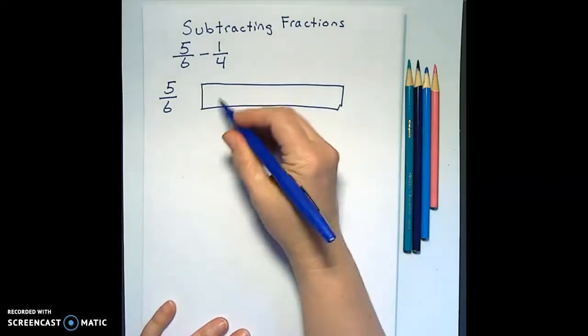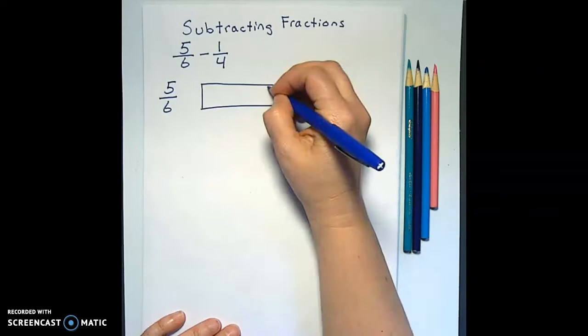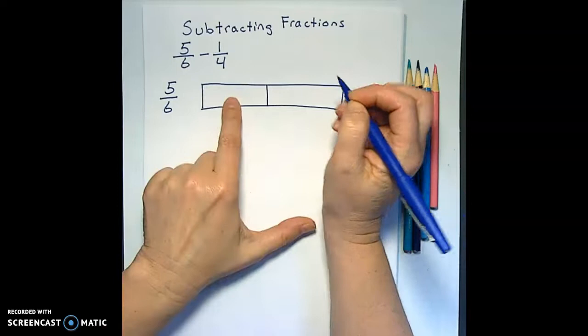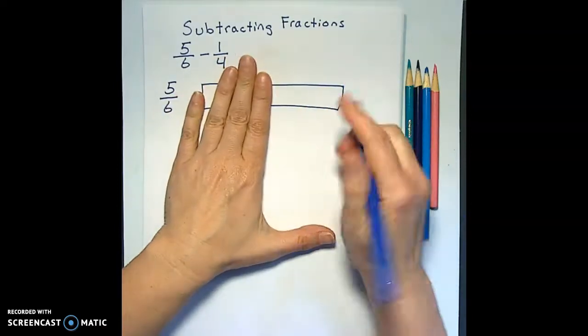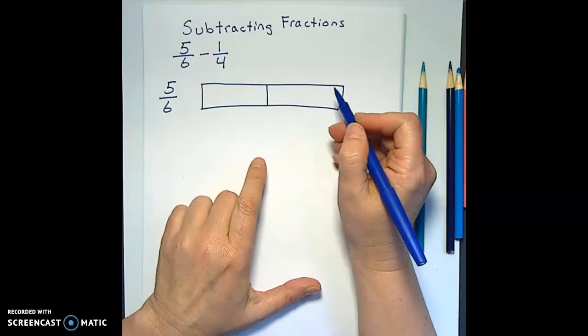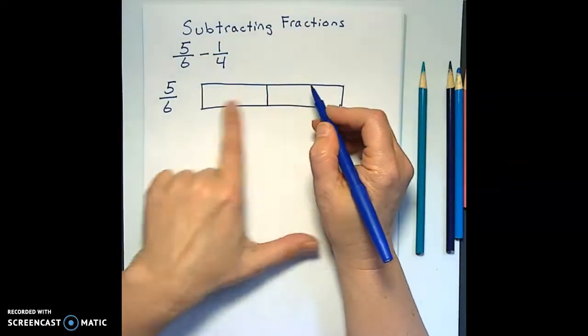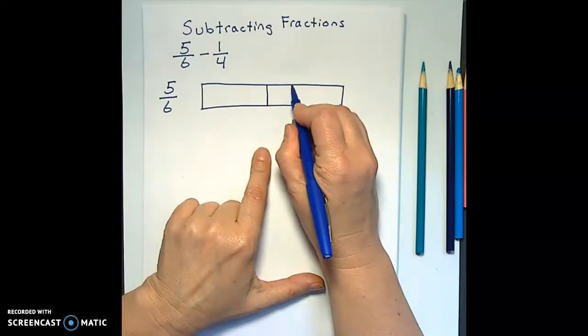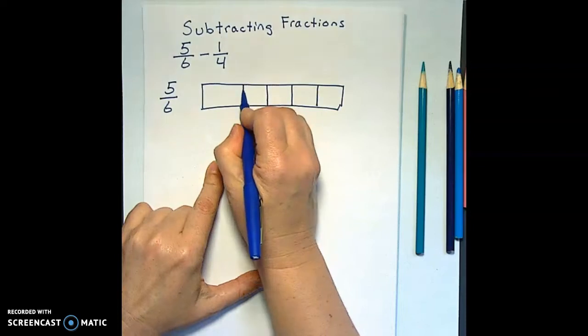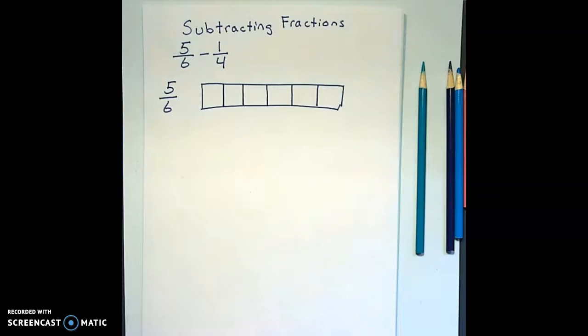Drawing sixths is kind of a pain, so for this I'm going to divide it in half first, and then after I've drawn halves, what should I draw in each half to make it into sixths? How many pieces does this need to have in it? Three? Awesome.